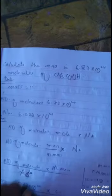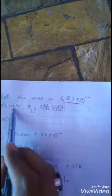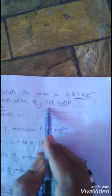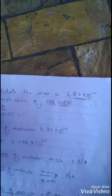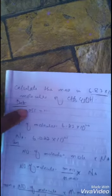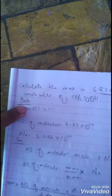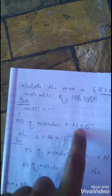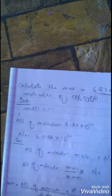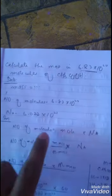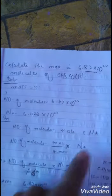One more numerical: calculate the mass. Molecules are given — you can see — and the molecule is acetic acid. We have to calculate mass. Number of molecules are given, Avogadro's number is constant. We have the simple formula: number of molecules is equal to moles multiplied by Avogadro's number.